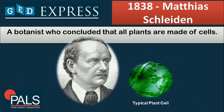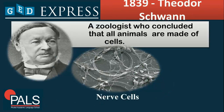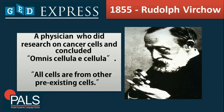At 1838, Matthias Schleiden, who is a botanist, was able to conclude that all plants are made up of cells. After Matthias Schleiden, we have Theodor Schwann at 1839. He is a zoologist and he was able to conclude that all animals are made up of cells.